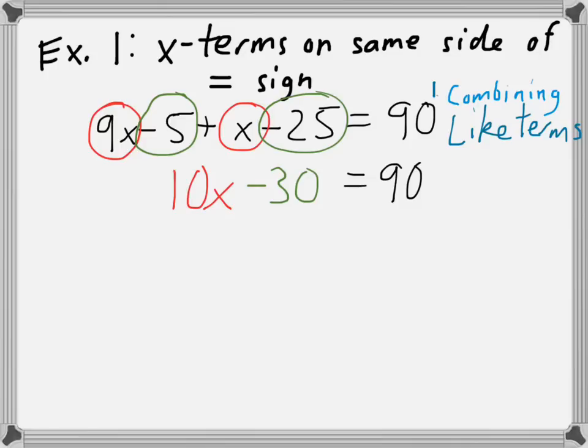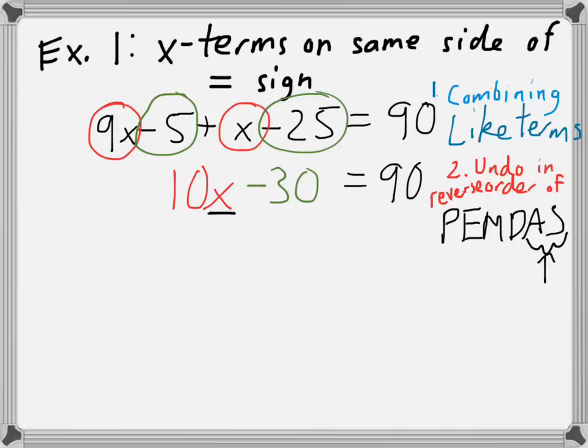Now, recall when we're solving an equation, we're trying to get the x by itself on one side of the equal sign. Here, we're multiplying the x by 10 and then subtracting 30 to get 90. In order to figure out what number should take the place of x, we need to undo in the reverse order of PEMDAS. That's important. If you recall, in PEMDAS, the a and s stand for add and subtract. So we should undo addition or subtraction first. The addition or subtraction that we have here is the minus 30. What is the opposite of subtracting 30? Well, it's to add 30. So I'll add 30 to cancel the subtracting 30.